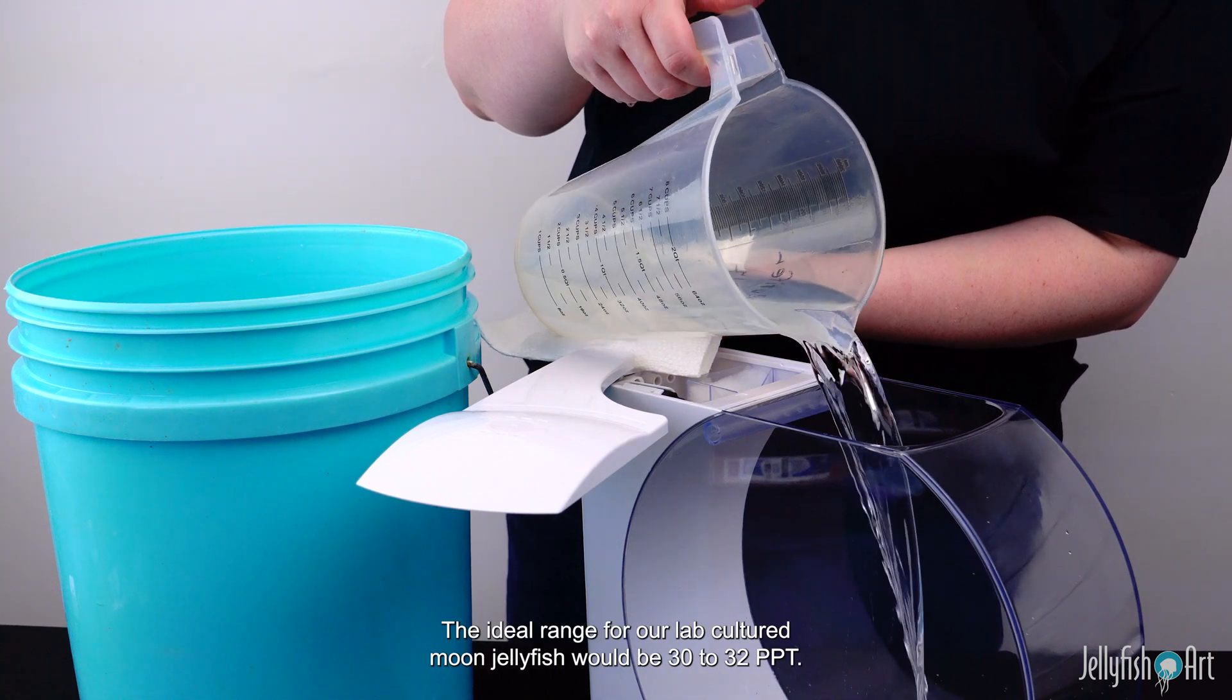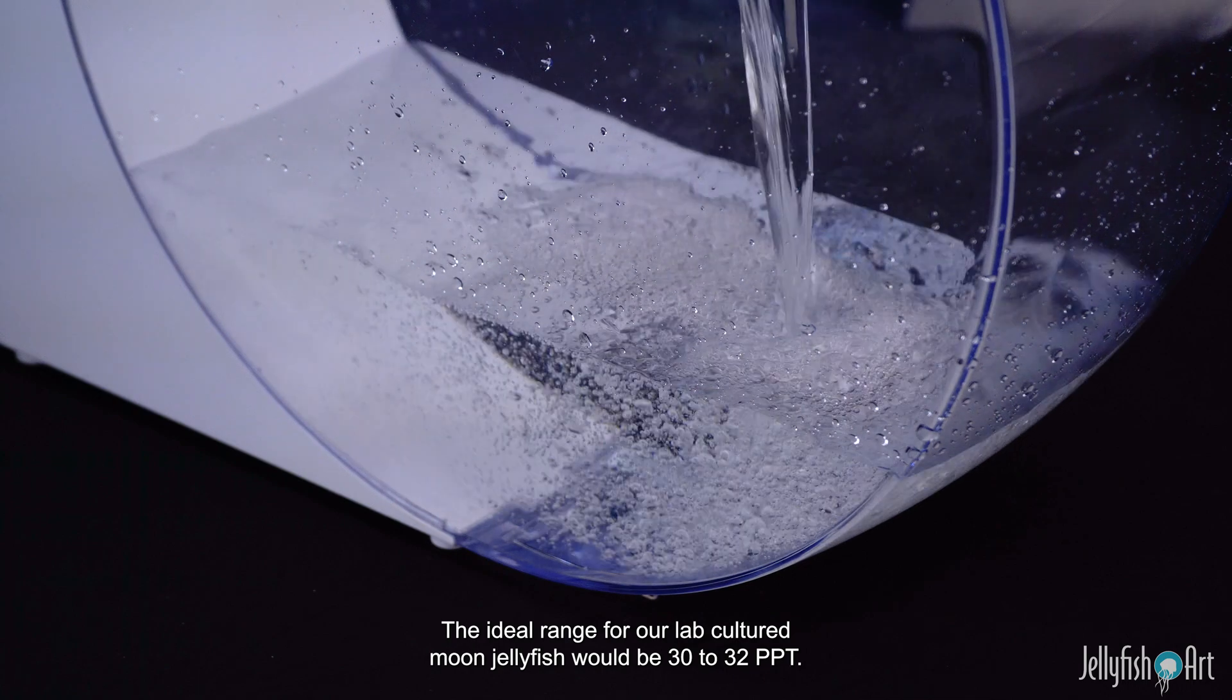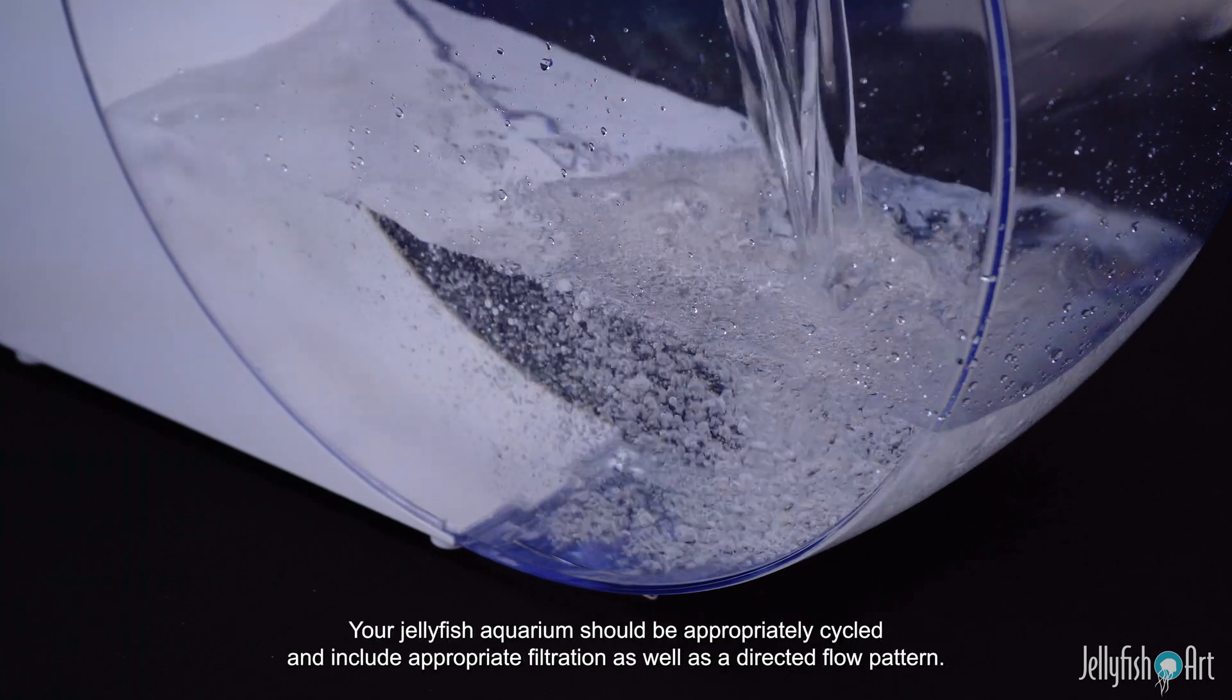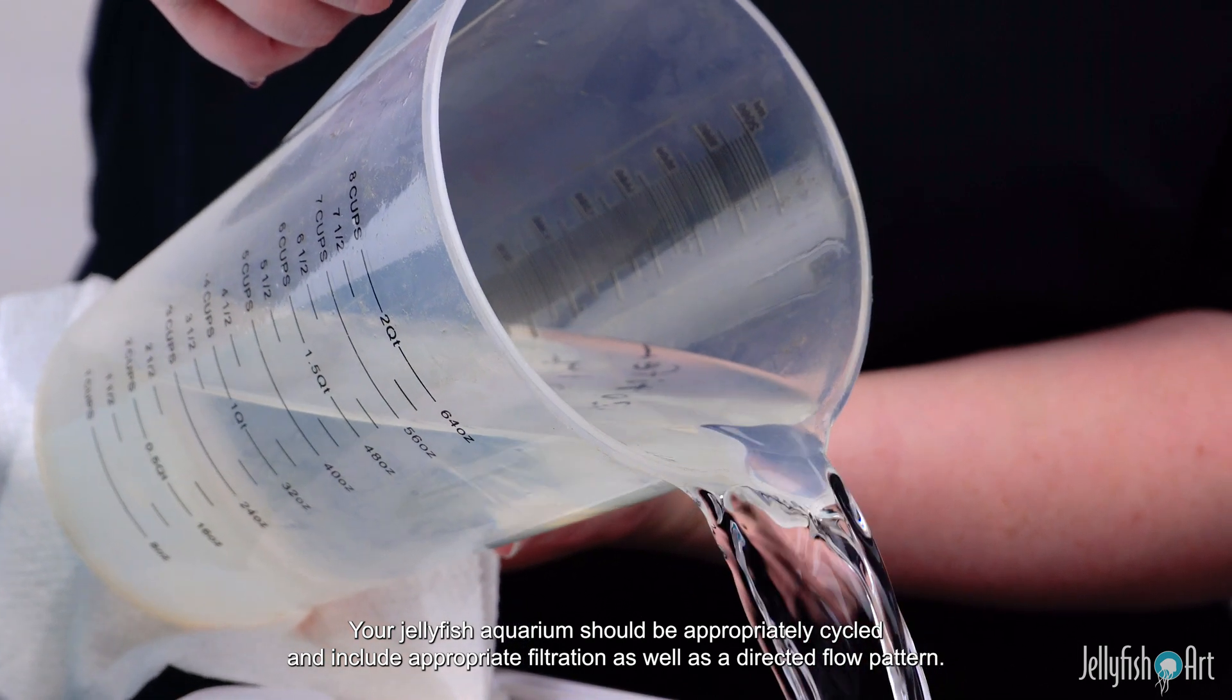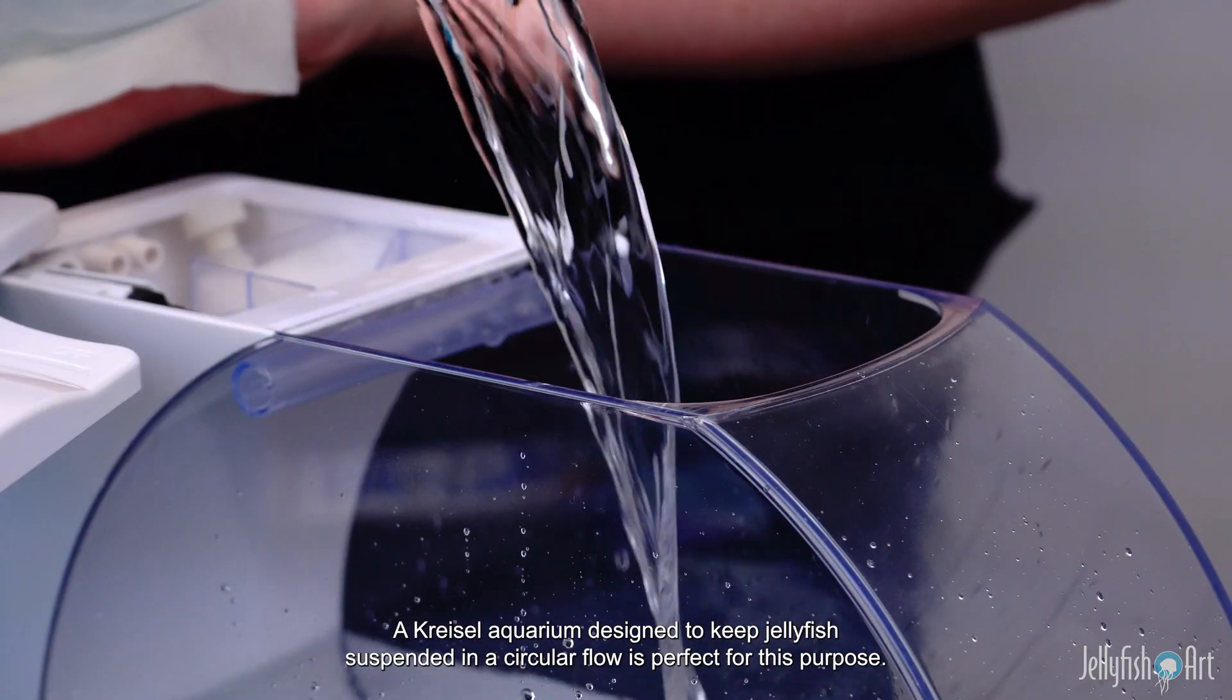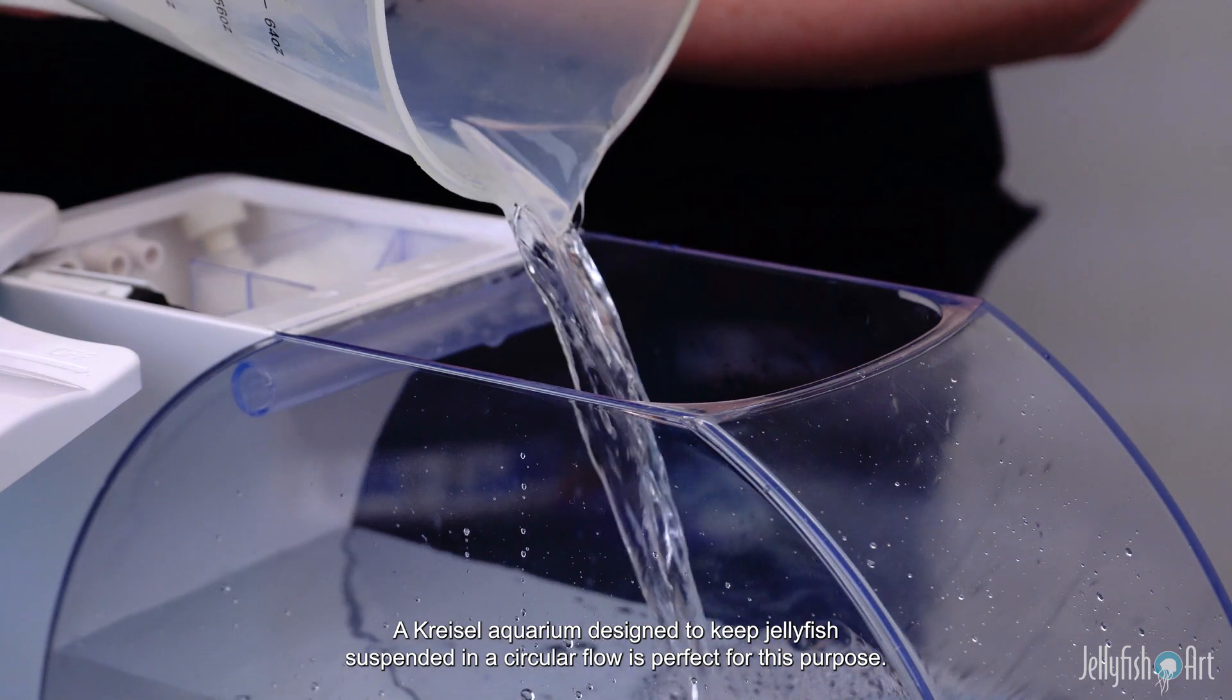The ideal range for our lab-cultured moon jellyfish would be 30 to 32 ppt. Your jellyfish aquarium should be appropriately cycled and include appropriate filtration as well as a directed flow pattern. A Kreisel Aquarium, designed to keep jellyfish suspended in a circular flow, is perfect for this purpose.